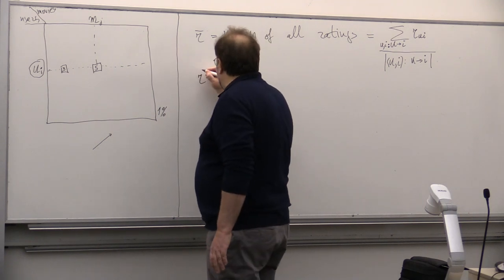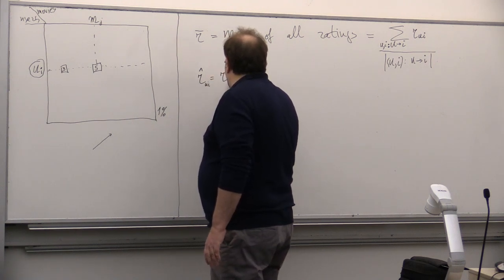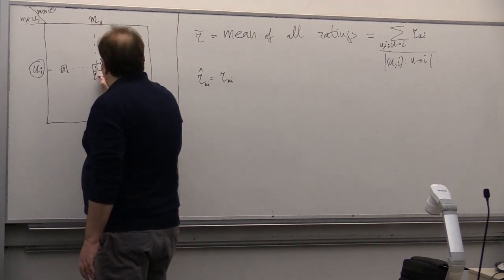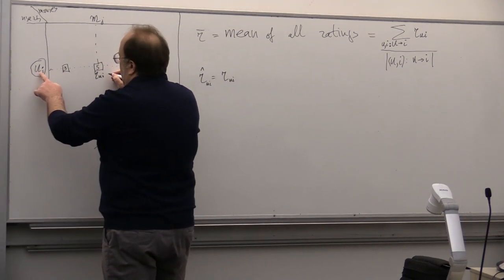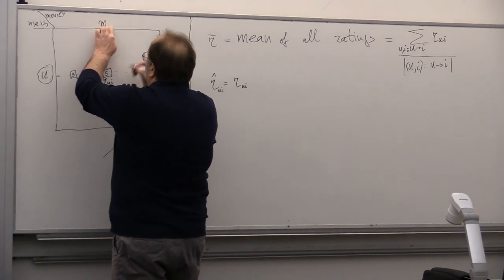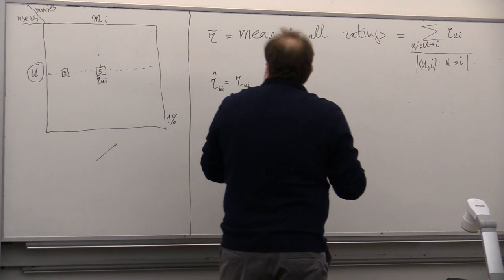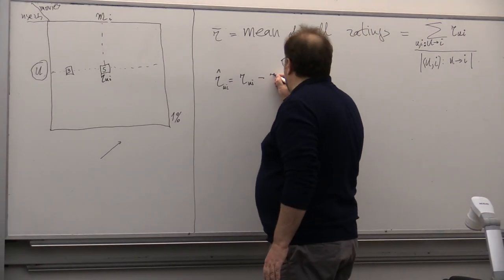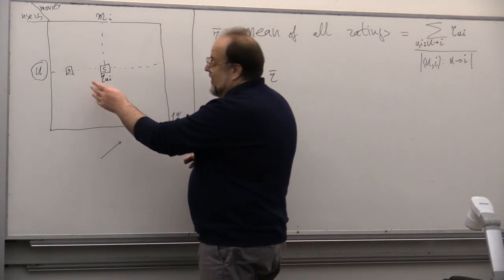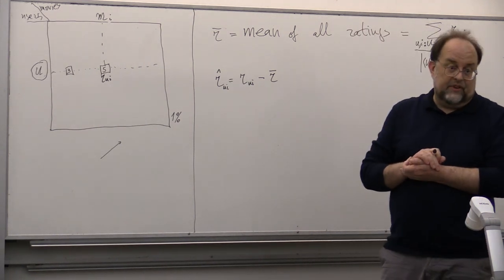So then you can get a new measurement, R hat of ui, simply as R ui minus R bar. So now we are in a better situation because now all the movies can be either, their score can be either below the global average or above the global average.